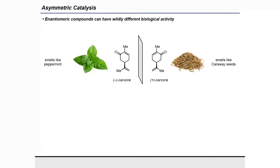Thank you for that kind introduction. Today, we're going to start our talk talking about asymmetric catalysis. As many of you are aware, enantiomeric compounds are found all over the place in nature, particularly within biological systems. And that means when we produce two enantiomeric forms of compounds, they can have wildly different biological activity. So as we see here, we have minus carvone, which smells like peppermint seeds, and we have plus carvone, which smells like caraway seeds.